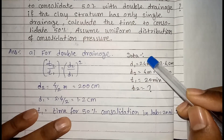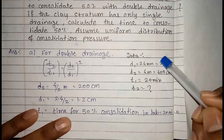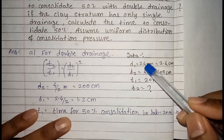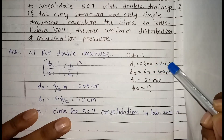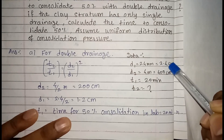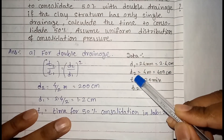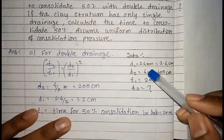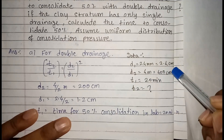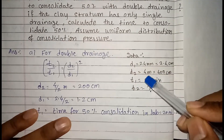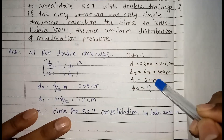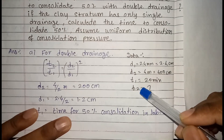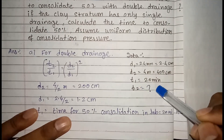So 24 mm divided by 2 gives a drainage path of 1.2 cm. D2 is the drainage path in the field. The depth of the clay stratum is 4 meters, that means 400 cm. T1, the time for consolidation in the laboratory, is 20 minutes. We now need to calculate T2, the consolidation time in the field.